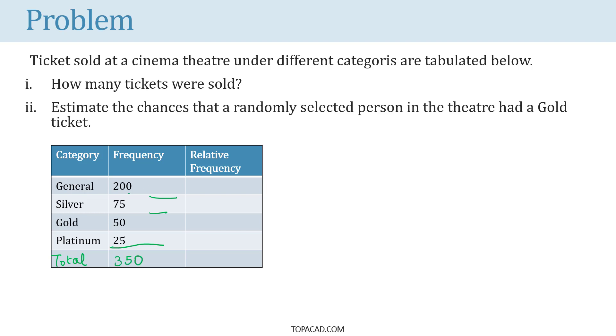Estimate the chances that a randomly selected person in the theater had a gold ticket. That is nothing but the relative frequency of the person having a gold ticket. So, let's calculate the relative frequency. It's 50 by 350 which is equal to 1 by 7. So, that is the probability that a randomly selected person in the theater will have a gold ticket.